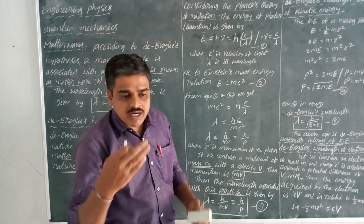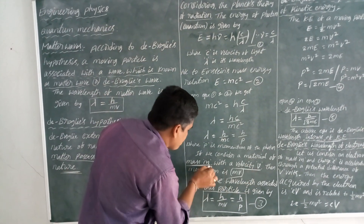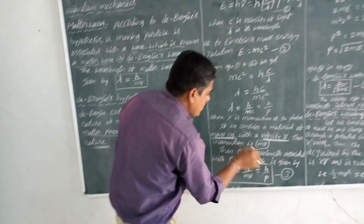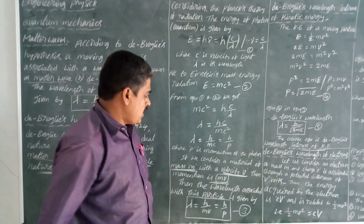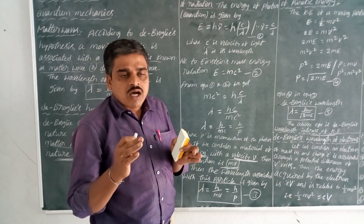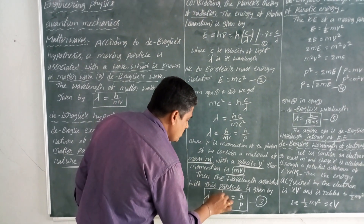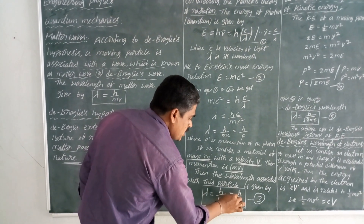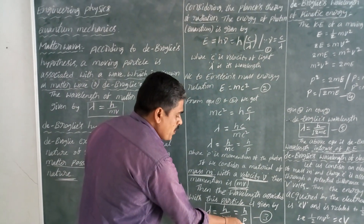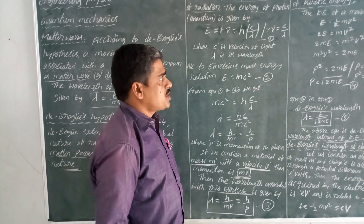If we consider a material particle of mass m with a velocity v, then the momentum is mv. The wavelength associated with this particle is given by lambda is equal to h by mv, that is equal to h by p, where p is the momentum of the particle — momentum being the product of mass and velocity.